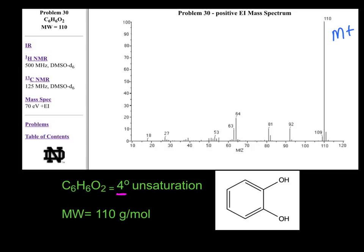When we look at mass spectra, the most important piece of information we get is the molecular weight. The signal furthest to the right on the spectra is our M-plus signal, or the molecular ion signal, which corresponds to the molecular weight of the molecule. The base signal is the most intense signal, and when the M-plus signal and the base signal are the same, that tells us our molecule is very stable.